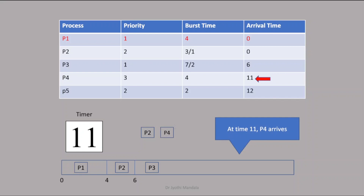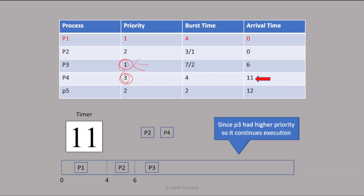Whenever a new process arrives, we need to check the priority of the new process P4 and the priority of the currently executing P3. P3 has priority 1 and P4 has priority 3. So P3 is having the highest priority and we can continue with P3 — no need to shift the CPU to the new process.